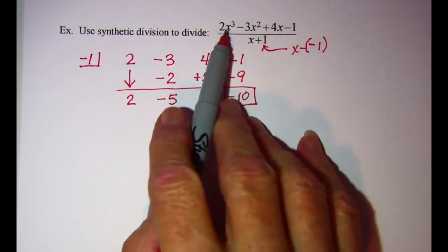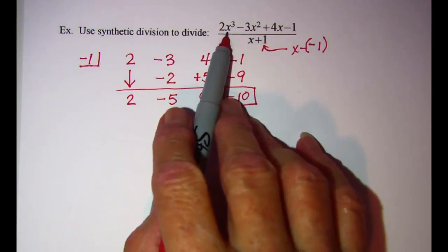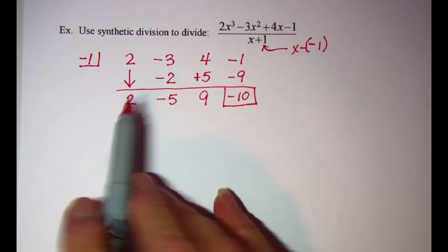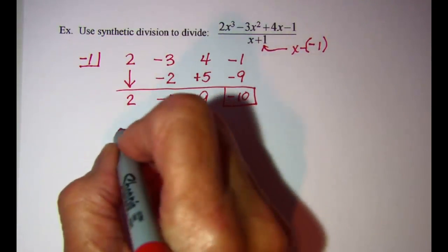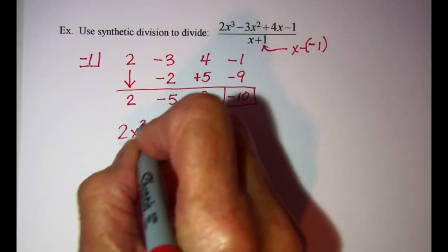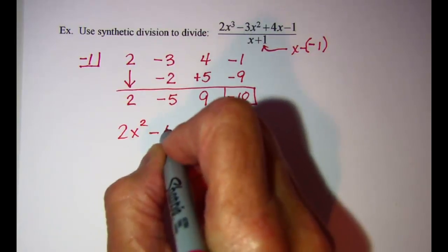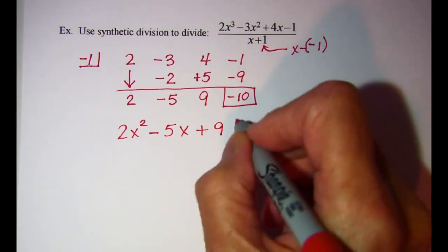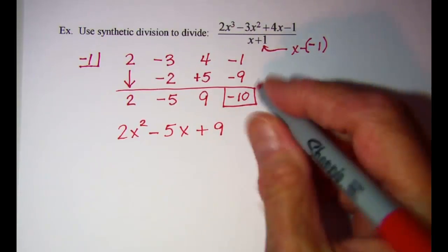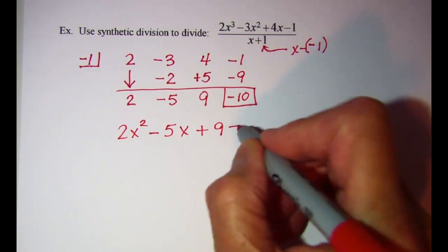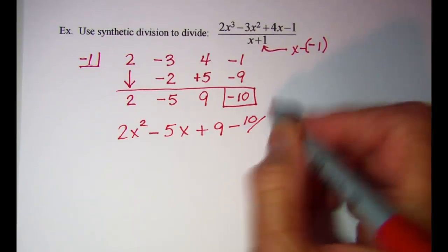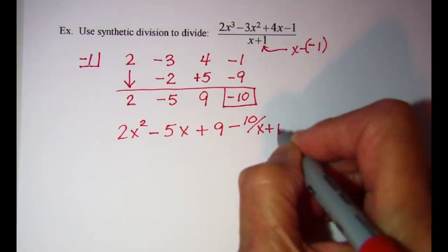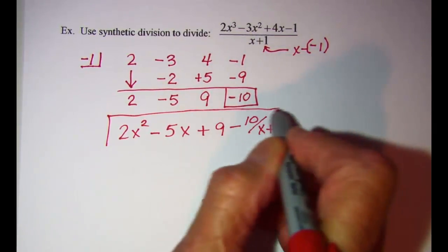The original problem was a third degree polynomial, so the quotient will be second degree: 2x squared minus 5x plus 9, and then a remainder of negative 10, which I write as negative 10 over the divisor x plus 1. This is my quotient.